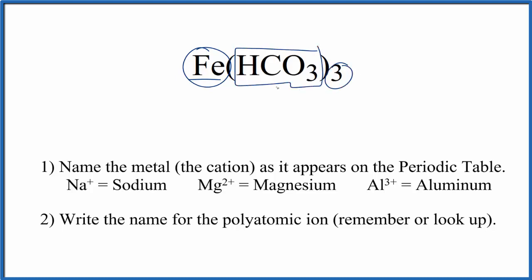So we have the metal, the polyatomic ion. We're going to treat this as an ionic compound, and we're going to take charge into account when we write the name.